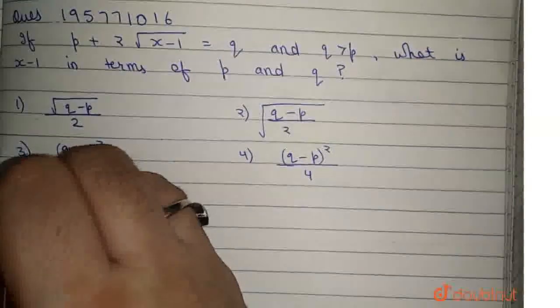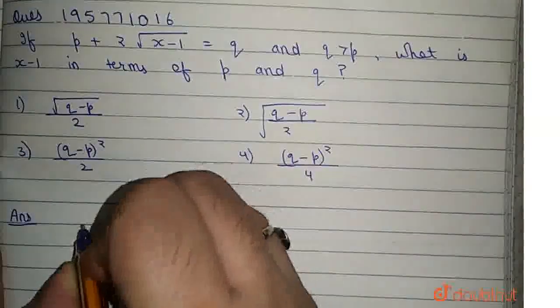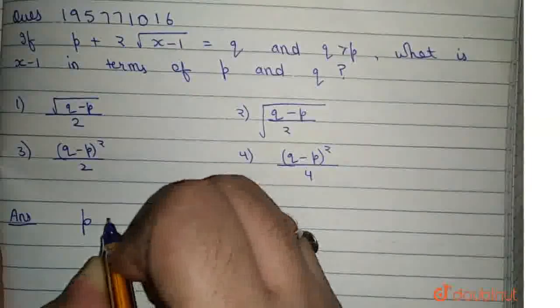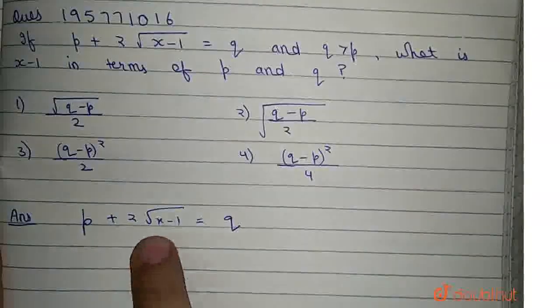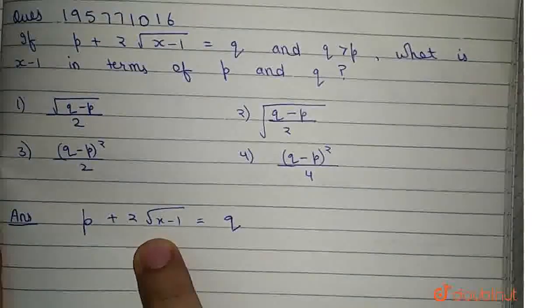Let us evaluate the answer. We are given p plus 2 square root of x minus 1 equals q. We have to find the value of x minus 1 in terms of p and q.